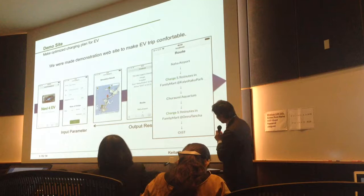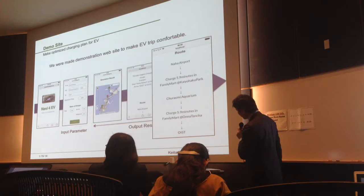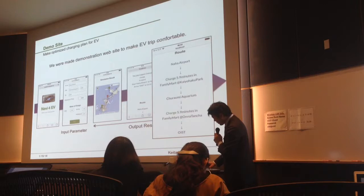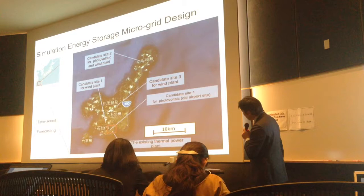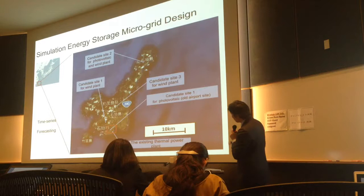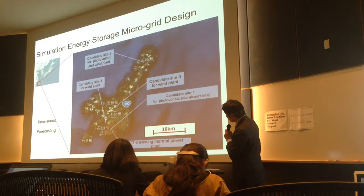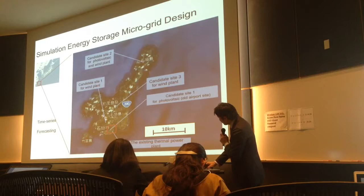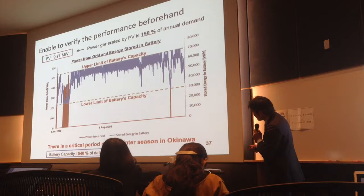That is phase one of the Okinawa project. Now we are moving to stationary battery use — a specially used microgrid planning network. This is the image of the simulation for energy storage microgrid design. This is one of the results for the Ishigaki Island case, where we made a time series simulation with demand and renewable energy production forecasting. With those simulations, we can find which season is critical for the microgrid.